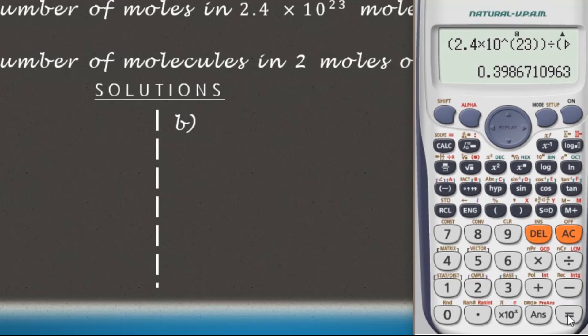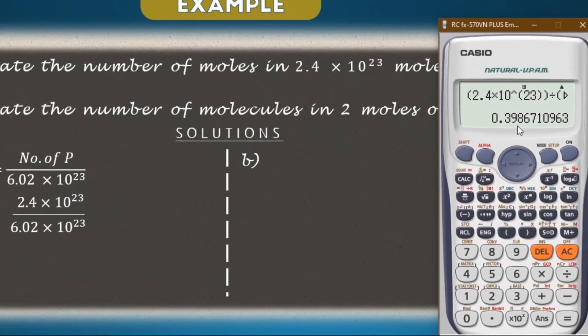We're going to use the calculator for this calculation. As you can see, our answer is shown on screen at 0.398710963. We're going to write this number correct to three significant figures. As you can see, we're going to round off this 6, and we'll have 0.399.